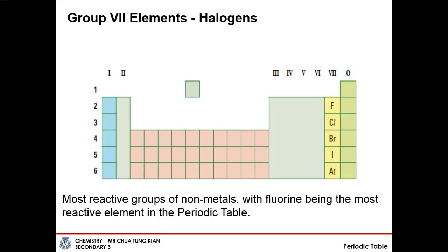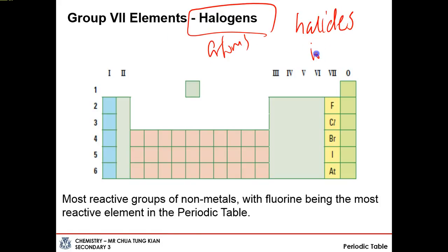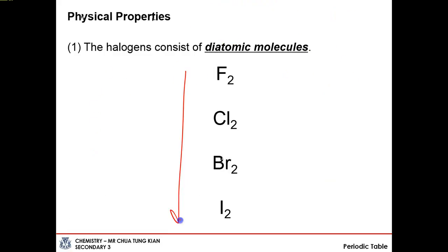Now let's move on to the next group of elements you need to know: group 7, the halogens. Halogens and halides refer to the atoms or ions from group 7. In group 7, the first element is fluorine, which happens to be the most reactive non-metal in the periodic table. Fluorine has 7 valence electrons and must bond with another fluorine to form the F2 molecule, giving both atoms a full octet configuration. As a result, halogens exist as diatomic molecules: F2, Cl2, Br2, I2, etc.